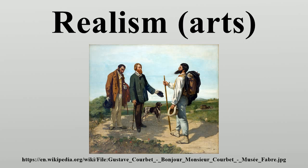Illusionistic realism: the development of increasingly accurate representation of the visual appearances of things has a long history in art. It includes elements such as the accurate depiction of the anatomy of humans and animals, of perspective and effects of distance, and of detailed effects of light and color. The art of the upper Paleolithic in Europe achieved remarkably lifelike depictions of animals, and ancient Egyptian art developed conventions involving both stylization and idealization that nevertheless allowed very effective depictions to be produced widely and consistently.